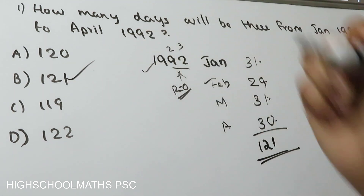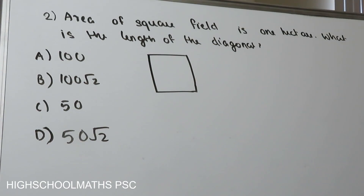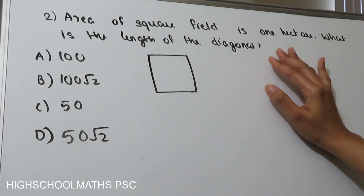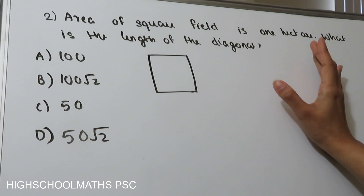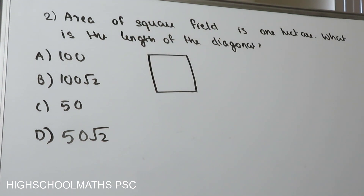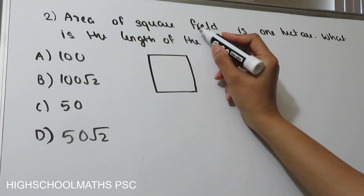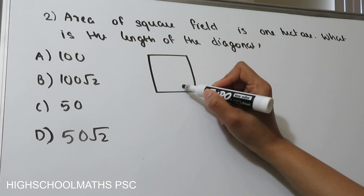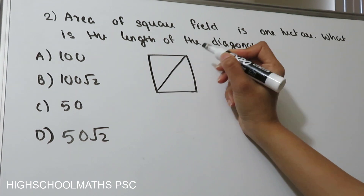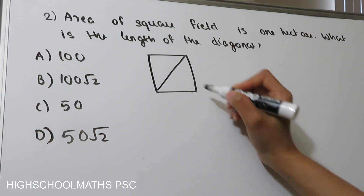Second question: The area of a square field is 1 hectare. What is the length of the diagonal? There are 4 options. We consider the square field and its diagonal.